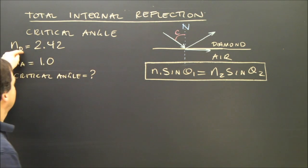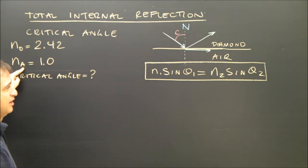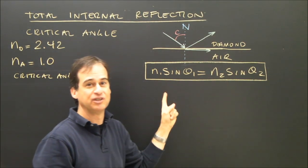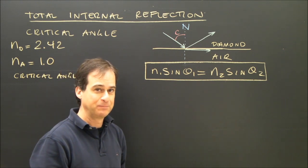Okay? So what do I know? I know the index, this index, I know this index, but I need to be given three things, because there's four variables in this formula, you need three. Well, that's something you've got to know about critical angle.